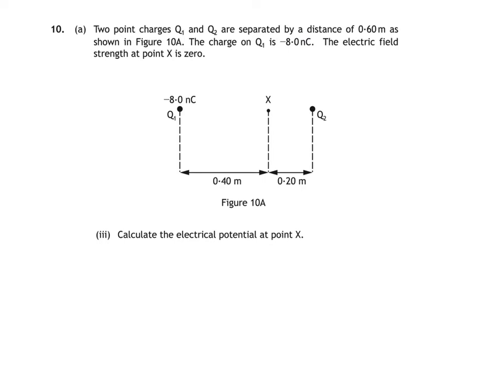To find our answer, we have to find the electrical potential at X due to charge Q1, then do the same for charge Q2, then add them. No need for vector addition here, since potential is a scalar.